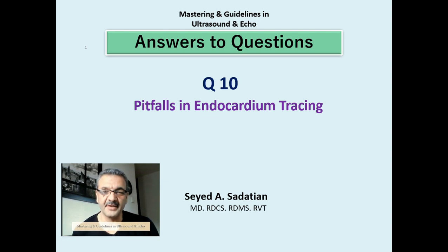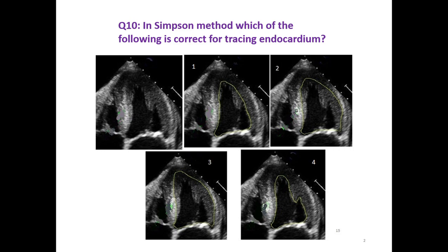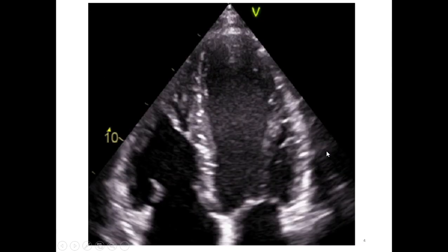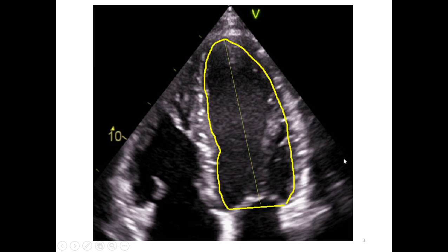Welcome to Mastering and Guideline in Ultrasound and ECHO. The most common and reliable technique for measuring ejection fraction is the Simpson or biplane disc method. In this technique, we get the apical four-chamber view, correct apical four-chamber view, zoom on the left ventricle, and then trace the endocardium at two points — end-diastolic and end-systolic — in apical four and apical two-chamber.